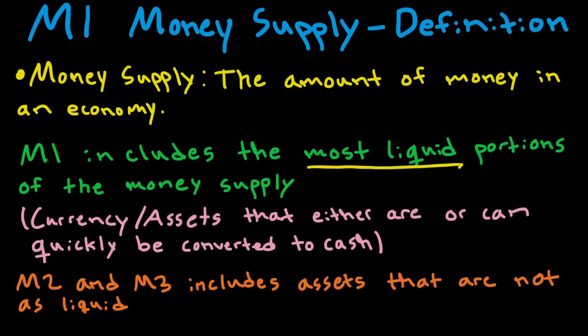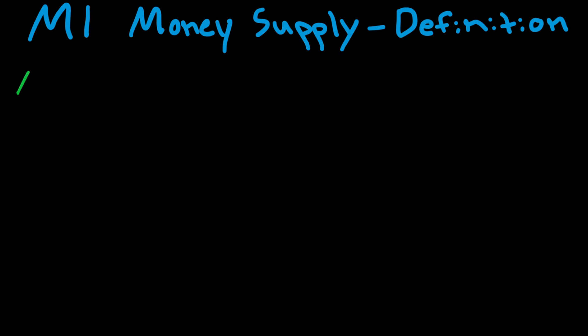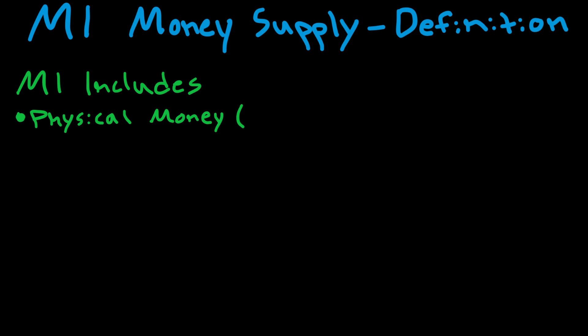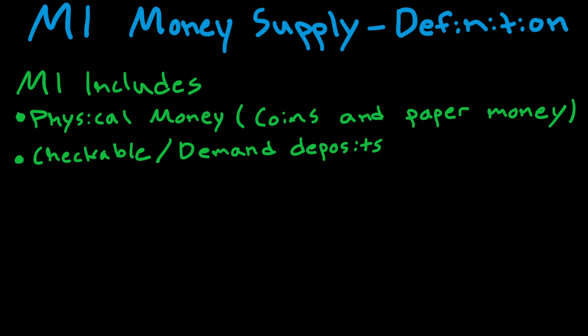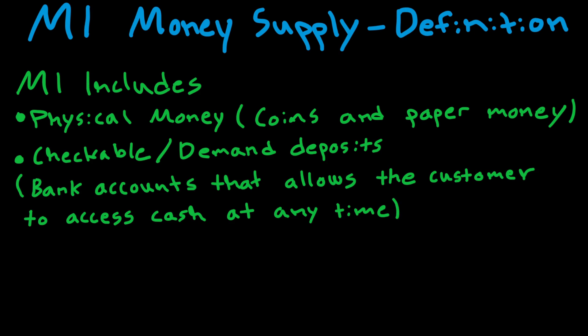Now that we have a basic understanding of M1, let's look at the different types. M1 includes, first of all, physical money — coins and paper money. Then we have checkable or demand deposits: bank accounts that allow the customer to access cash at any time, basically very liquid bank accounts where we can withdraw money whenever we want.